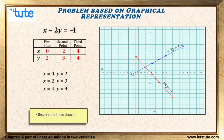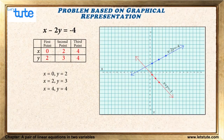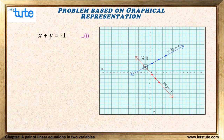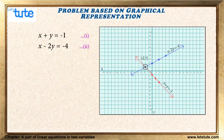Our third step is to observe the lines and find the solution. The lines drawn are intersecting lines, and they intersect at the point (-2, 1). The line for x plus y equals minus 1 and the line for x minus 2y equals minus 4 intersect at x equals minus 2 and y equals 1. Therefore, the solution of these two equations is x equals minus 2 and y equals 1.